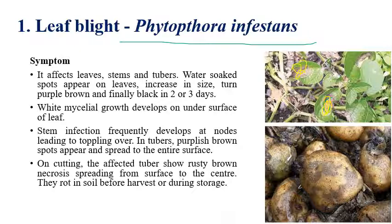The water-soaked lesions on leaves increase in size within two to three days and eventually cover the entire leaf. If you cut open the tubers, brown color discoloration and softening of tissues can be clearly observed, which makes them completely unfit for consumption. In severe stages, rotting of the tubers occurs and mycelial growth can also be observed.